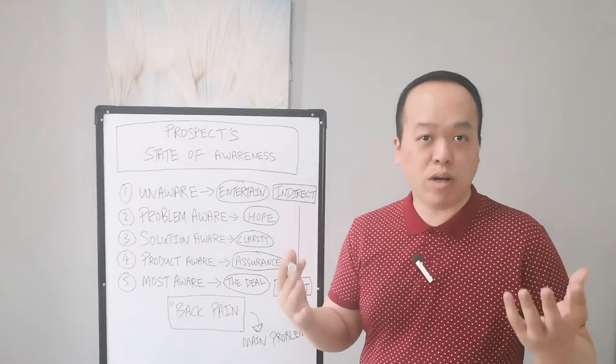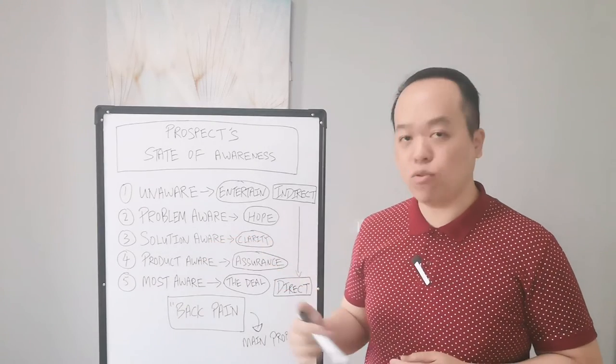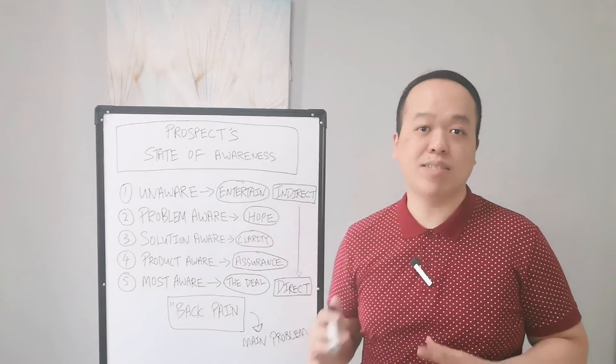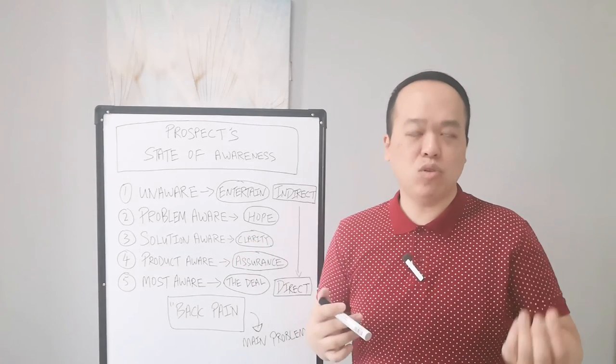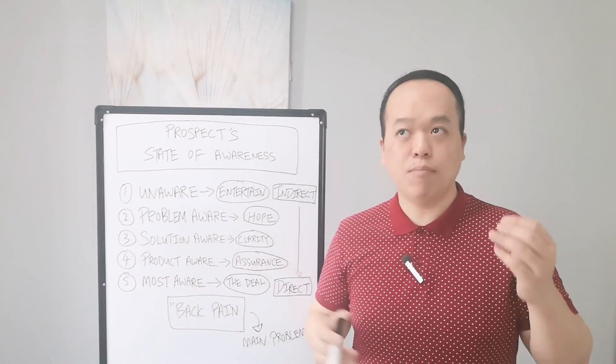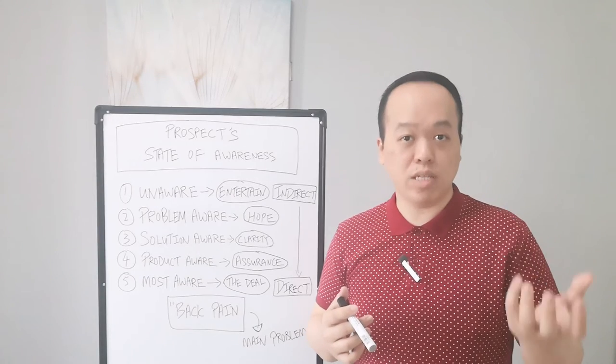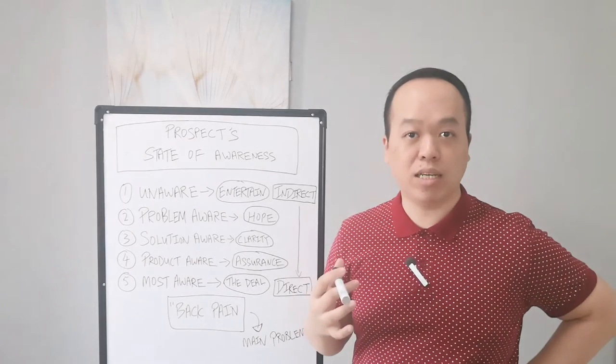In this third stage, what they need is some clarity. They want to know that there are a lot of options given to them. Maybe they think yoga is the best option to suit them, so they can strengthen their back to prevent any back pain in the future.